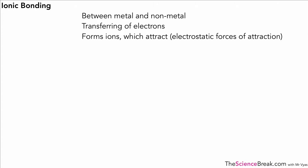In this video we're going to take a detailed look at how ionic bonding works. A quick recap from the last video: ionic bonding happens between metal and non-metal atoms. It involves the transferring of electrons and we have the formation of ions which attract each other with electrostatic forces of attraction.